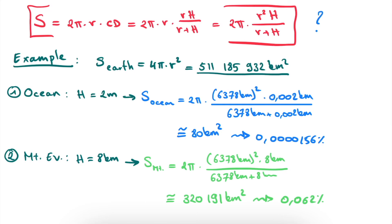An interesting thing to consider: what is the largest surface you could possibly see? This is the case when H approaches infinity — hovering infinitely far from the Earth. In this limit, R becomes negligible compared to H in the denominator, so the H terms cancel and we are left with 2πR², exactly half the surface of a sphere. This makes sense: from infinitely far away you can see at most exactly one hemisphere. Unless, of course, you're hovering near a black hole — but that would be a story for another video.